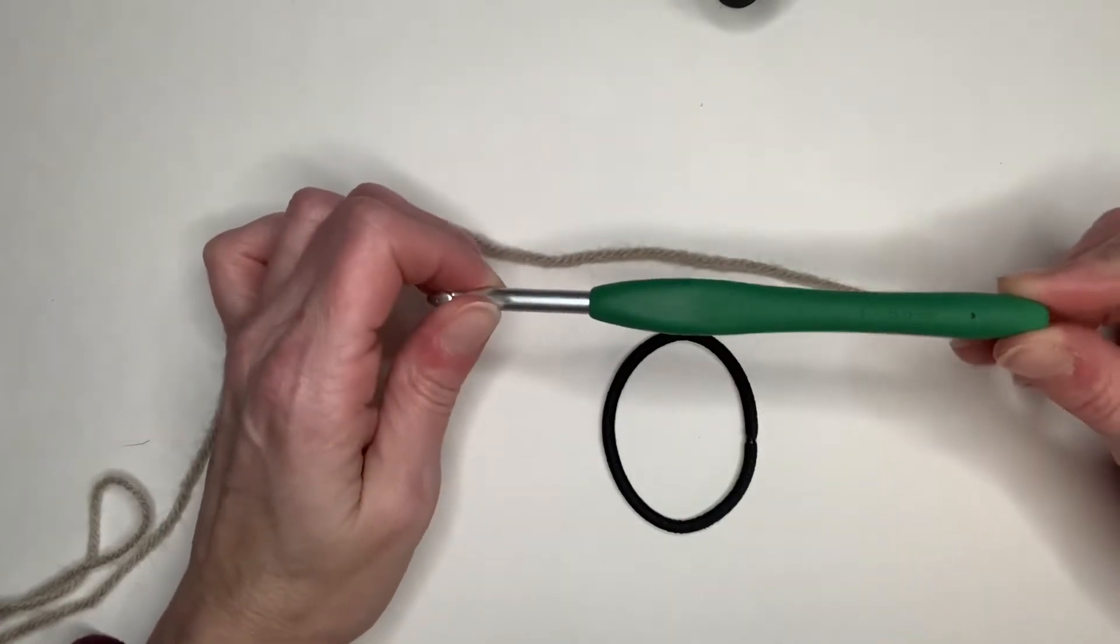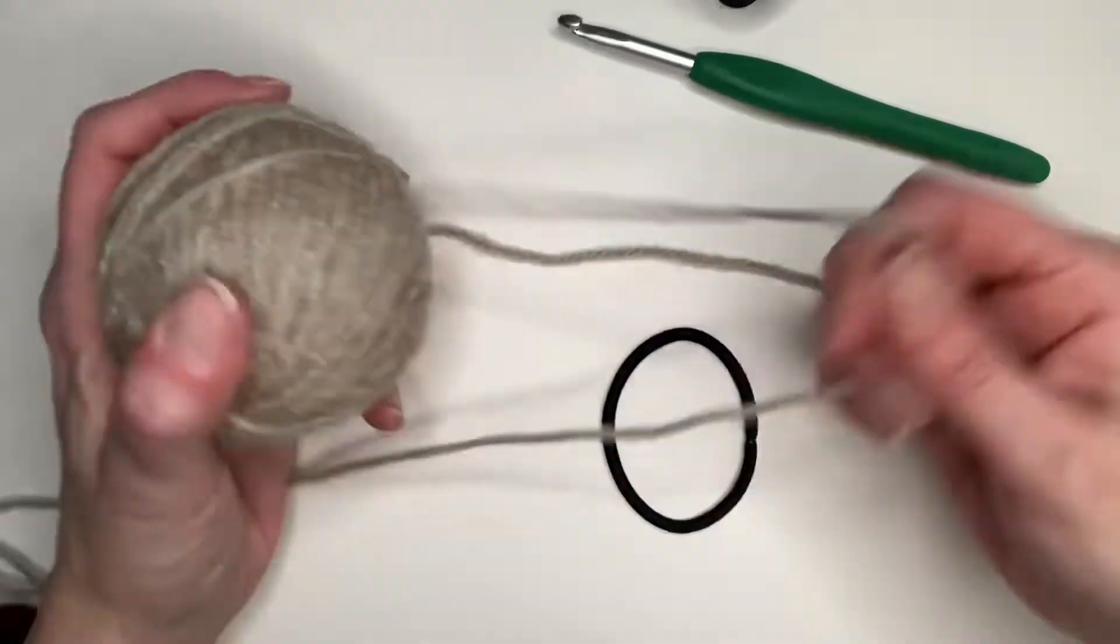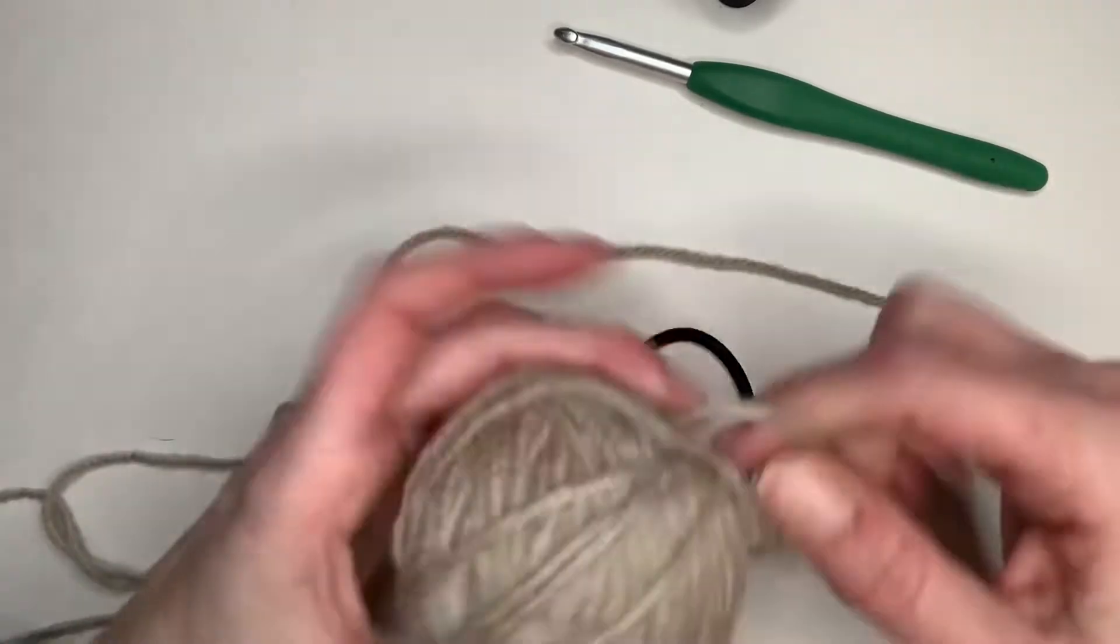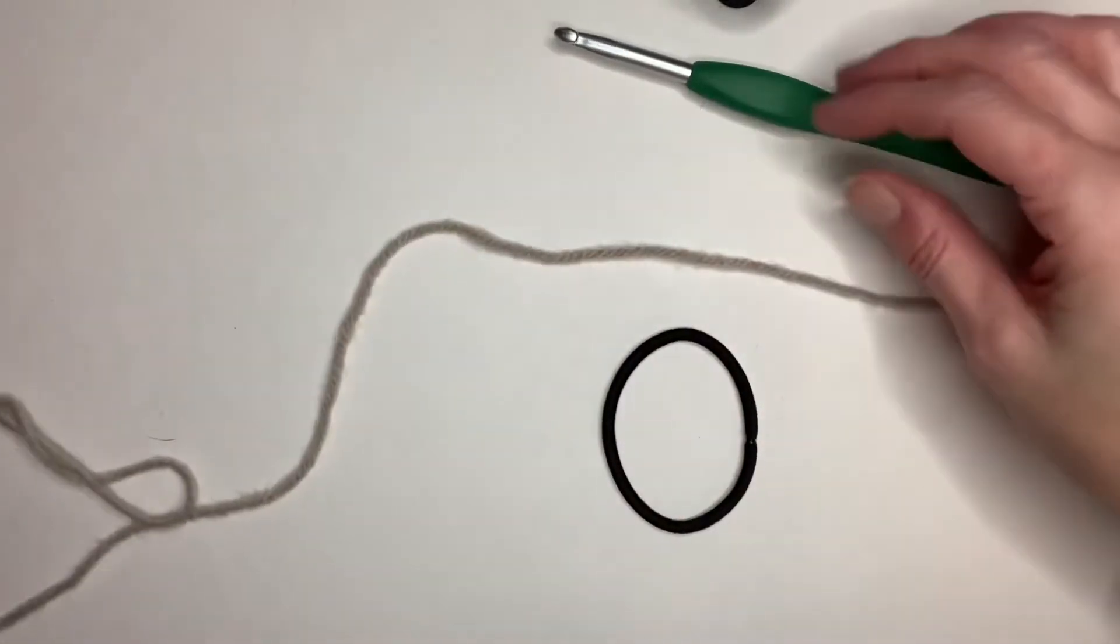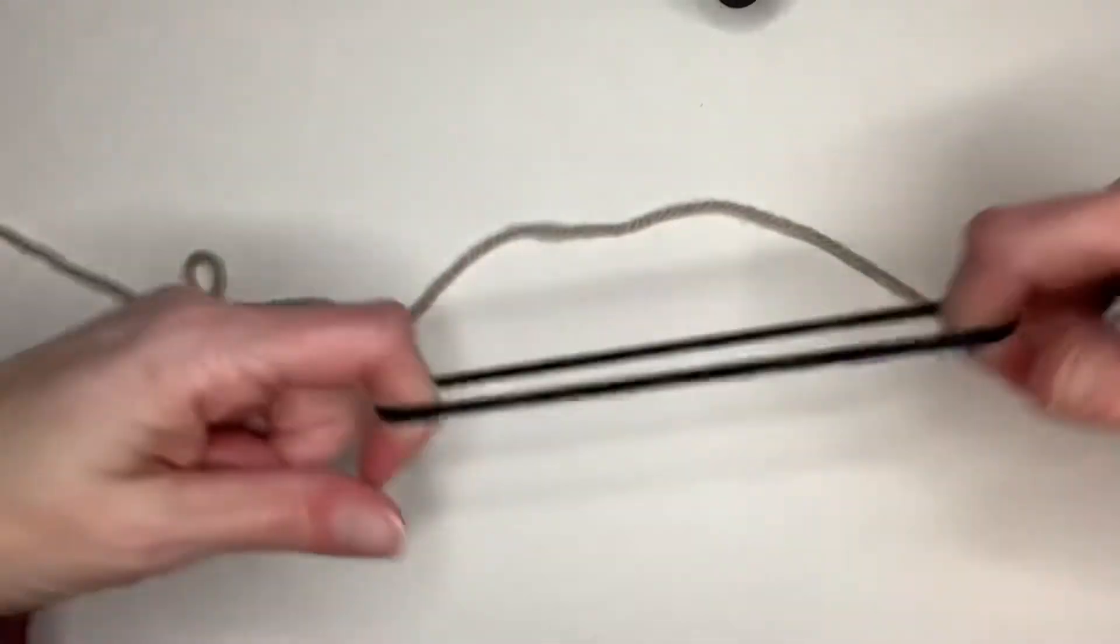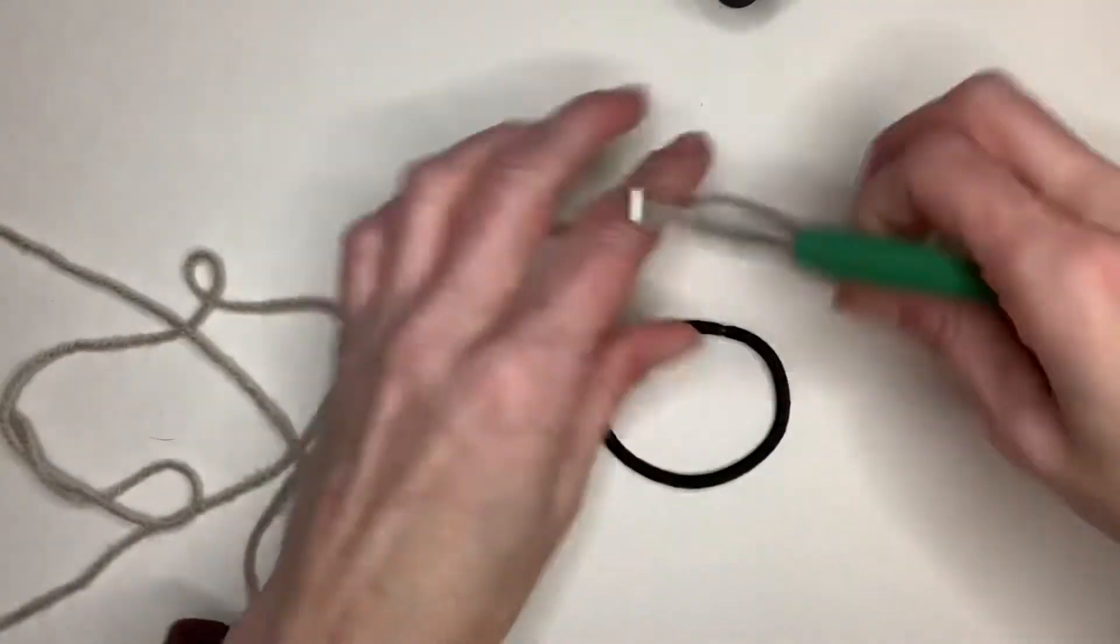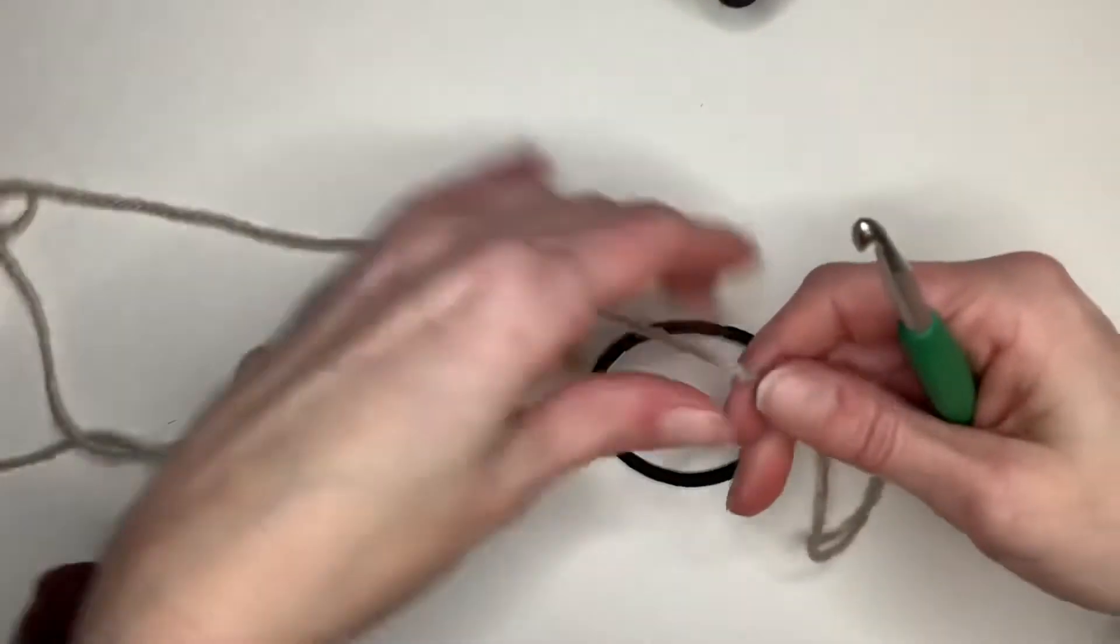A 5.5 millimeter crochet hook, number four worsted weight yarn. I'm just using a scrap ball. This is a great way to use up scraps and a hair tie. I got a pack of these from the Dollar Tree, so not big cost on this.